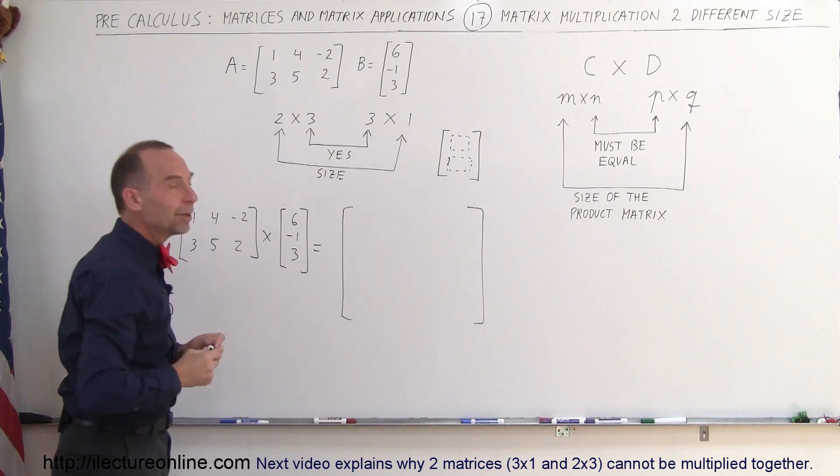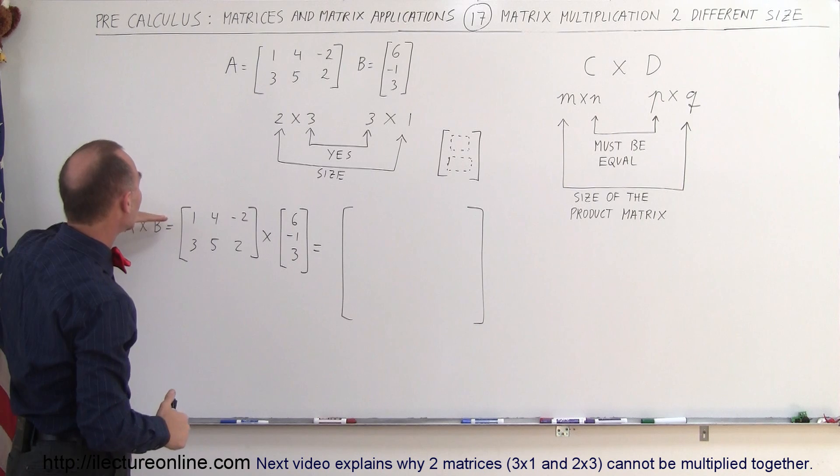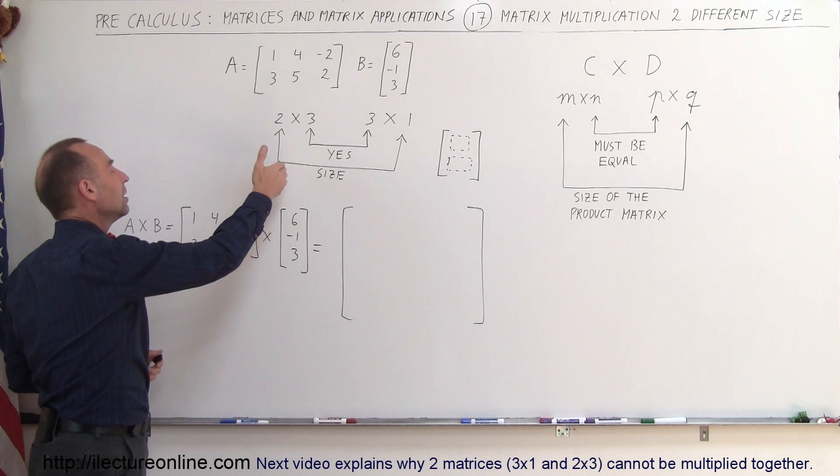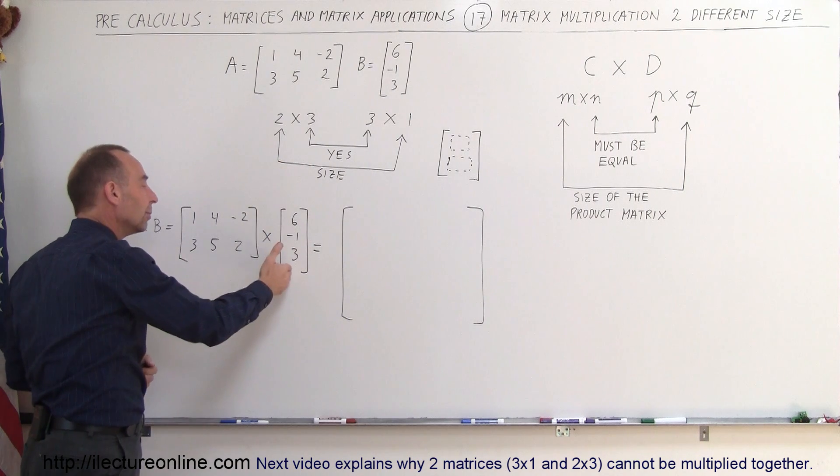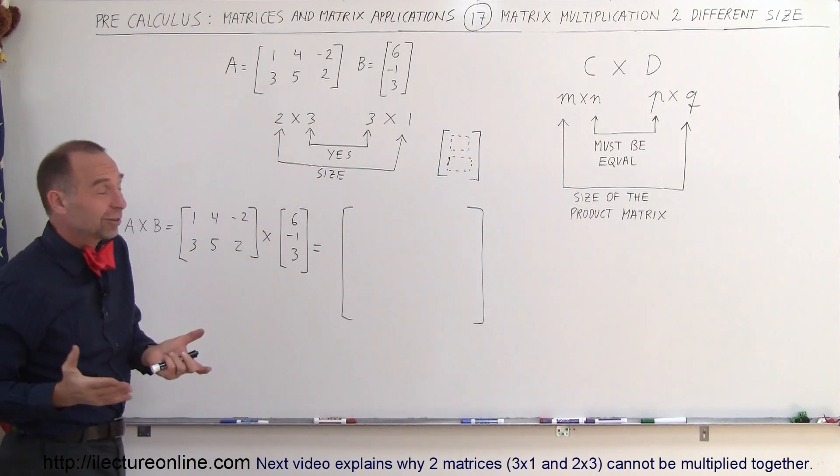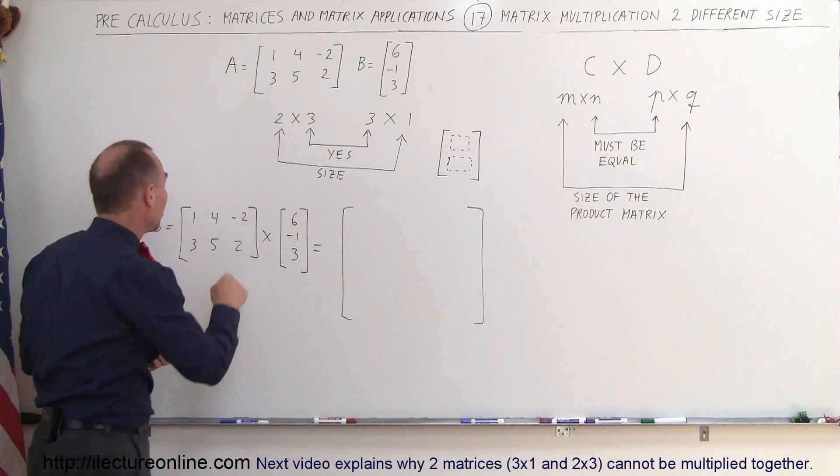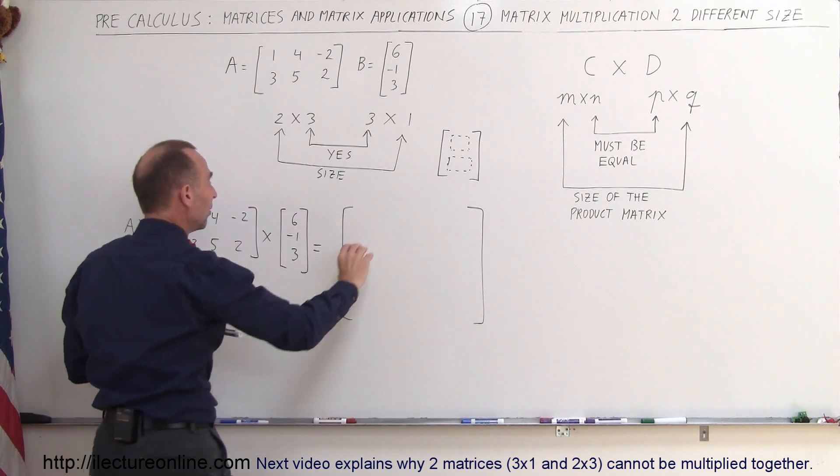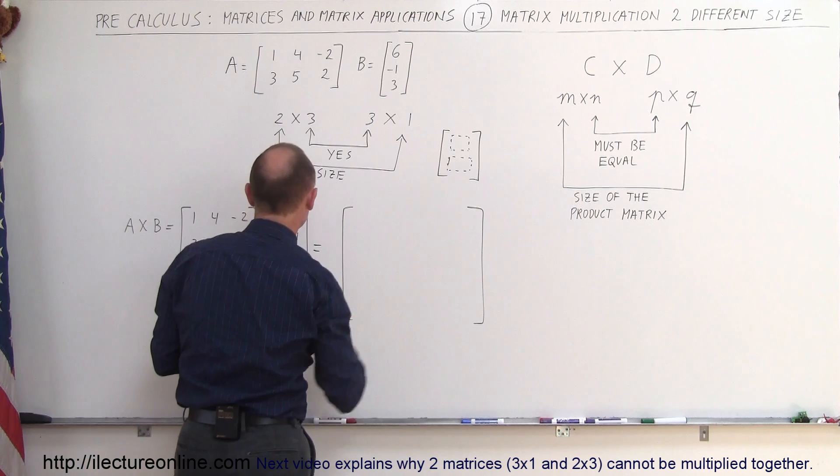And the first element can be obtained by taking all the elements of the first row of the first matrix and multiplying times all the elements of the first column in the second matrix. Of course, there's only one column, but it's the first column. So multiply these three elements times those three elements, and we get the following for the top element of the resulting matrix.